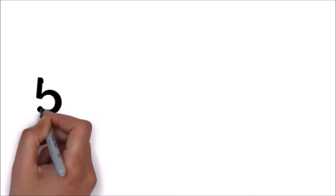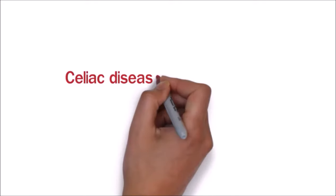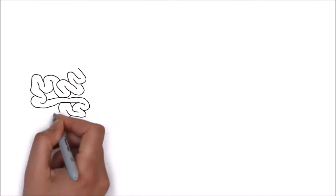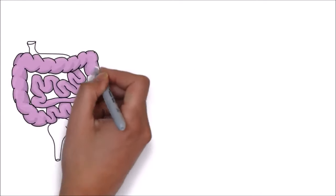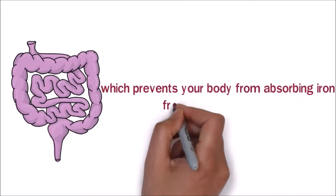Number 5: Gluten-rich foods. If you have celiac disease or gluten intolerance, you should altogether avoid foods that contain gluten. Gluten tends to destroy the walls of the small intestine, which prevents your body from absorbing iron from the food you eat.